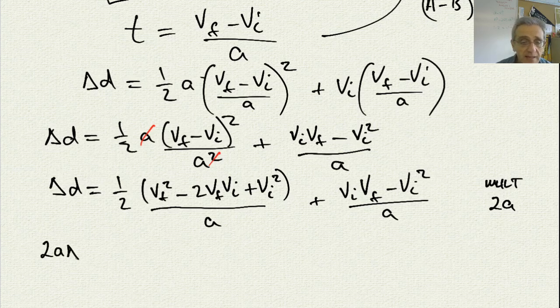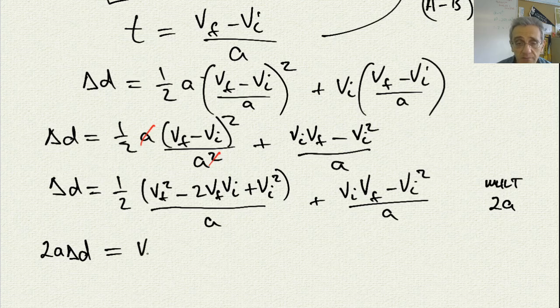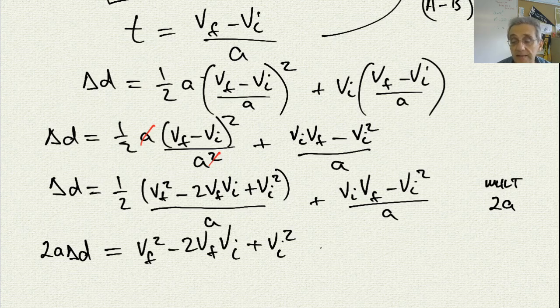So I have to multiply the whole equation by 2a. So I get 2a delta d is equal to, now the two cancels with the one half, so the one half disappears. And the a disappears as well. V-final squared minus 2v-final v-initial plus v-initial squared.